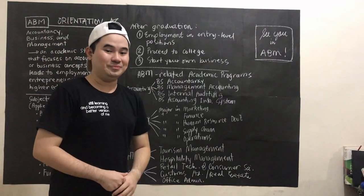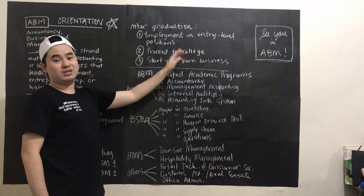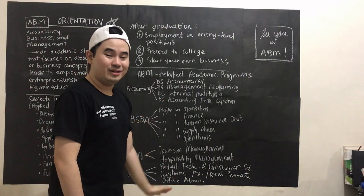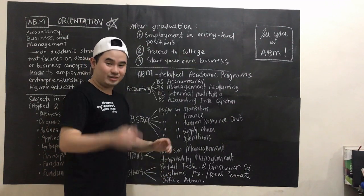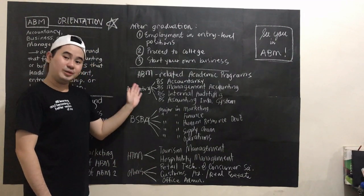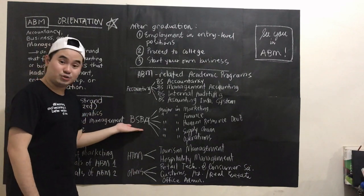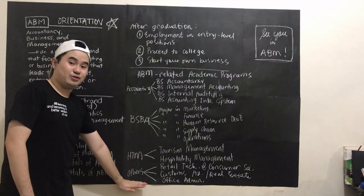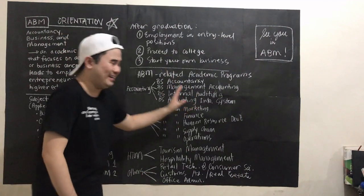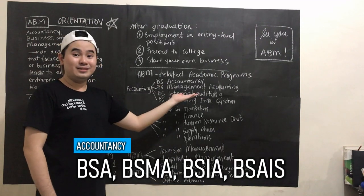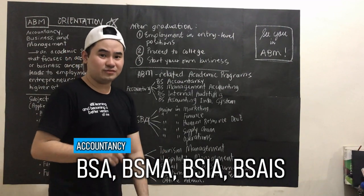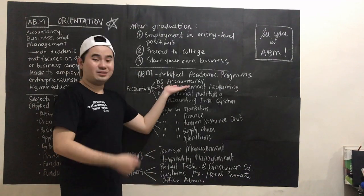So this is a very promising strand for you. Now, should you enter college, I have here a list — actually this is not an extensive list, so if you think I'm missing anything, you can comment down below. ABM-related academic programs or degree programs can be in accounting, in business administration, in hospitality and tourism, or others. For accounting, we have BS Accountancy, which will lead to the CPA board exam. So if you have the goal of being a certified public accountant like me, you should take BS Accountancy.